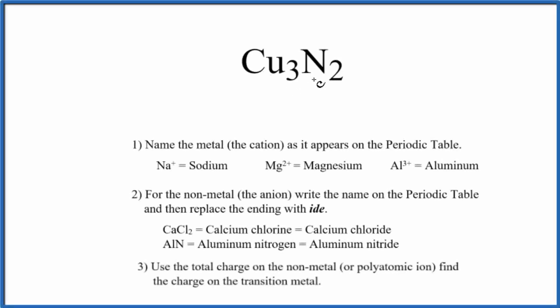To write the name for Cu3N2, we first need to realize that we have copper, that's a metal, and then nitrogen, that's a nonmetal. So metal and a nonmetal, that's an ionic compound.